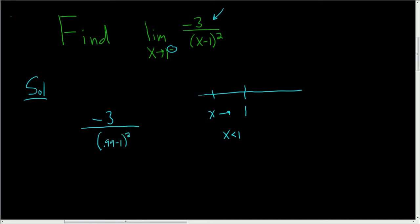If you plug in 0.99, you end up with negative 3 over negative 0.01 squared. So the situation is this: we have a negative number in the numerator, and on the bottom it's going to end up being a super small positive number.